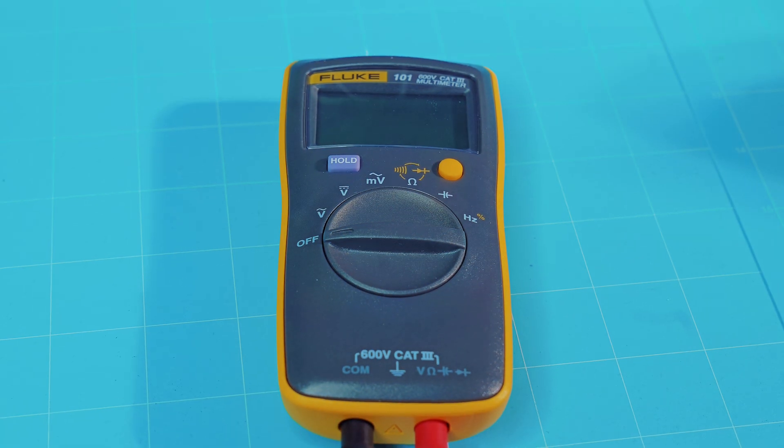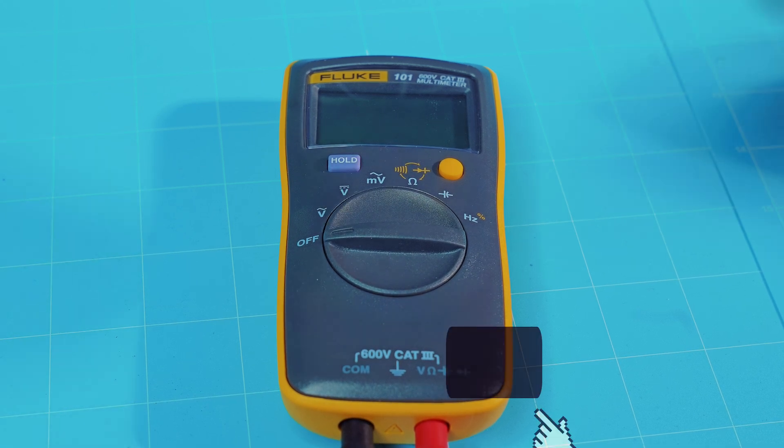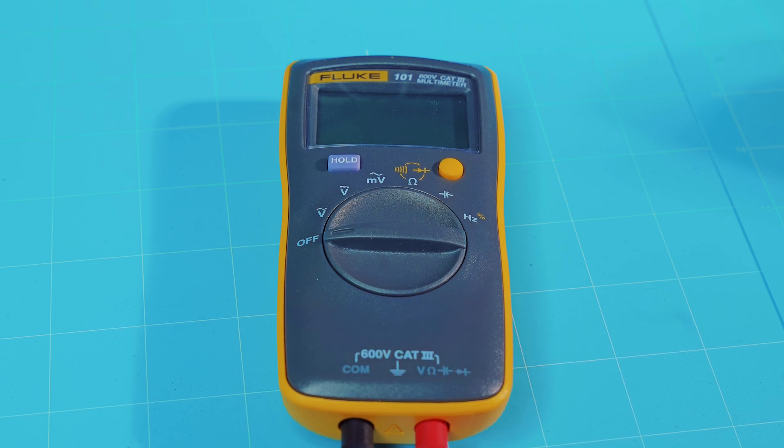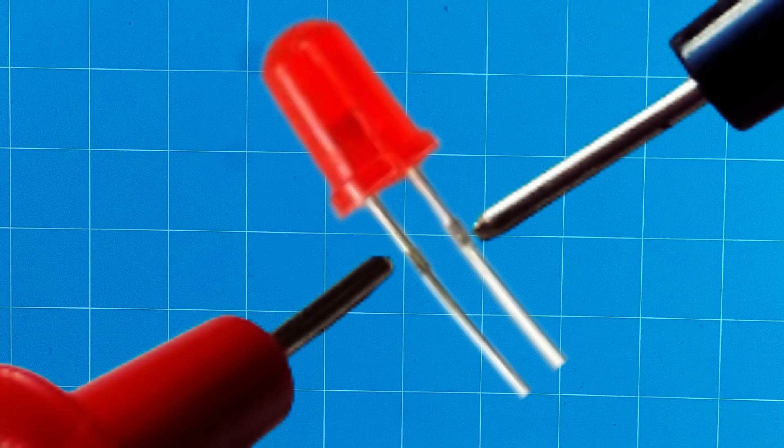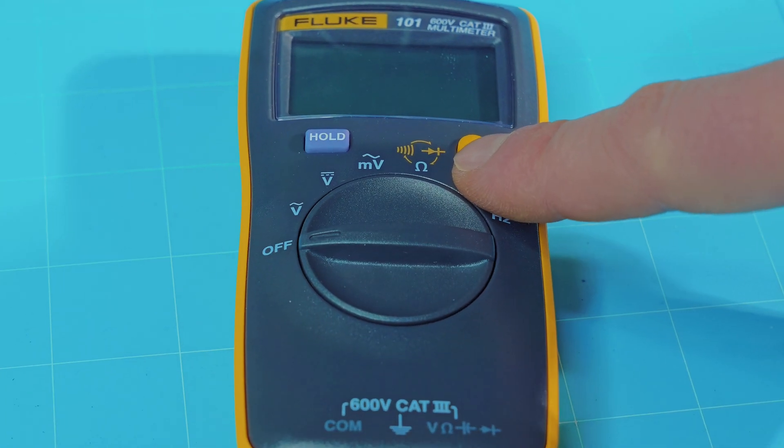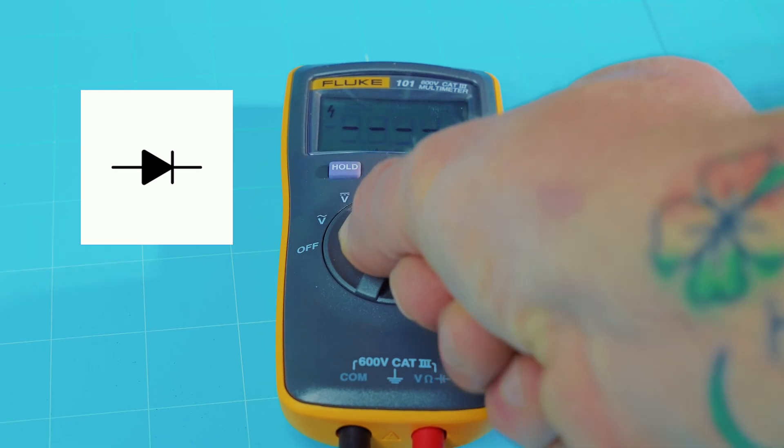On to the Fluke 101. This is a slightly step up from the Electrotech cheaper multimeter. This one's actually still fairly cheap. Again, I'll throw these links down in the comments. You can check those out on Amazon for yourself. And to test an LED with a regular style multimeter such as this, most of them are going to have your diode mode, which is the triangle with the line. So we'll go ahead and push it into that.